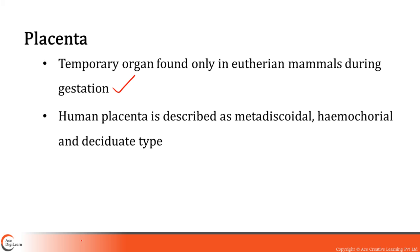Human placenta — remember the different terms used to describe it. Metadiscoidal: it is restricted to a disc-like zone on the chorion. Hemochorial: because the chorionic villi of the fetal placenta is literally bathed in the maternal blood sinuses. Deciduate means that during childbirth, a part of the mother's uterine tissue also comes out along with the unplugged placenta. Remember these three terms regarding the human placenta.